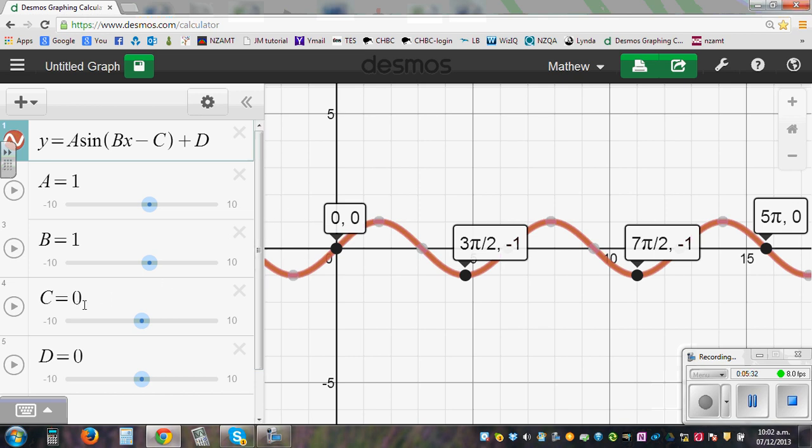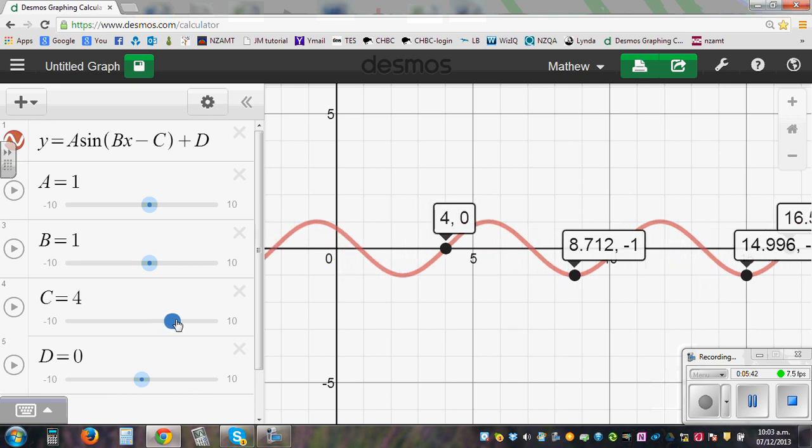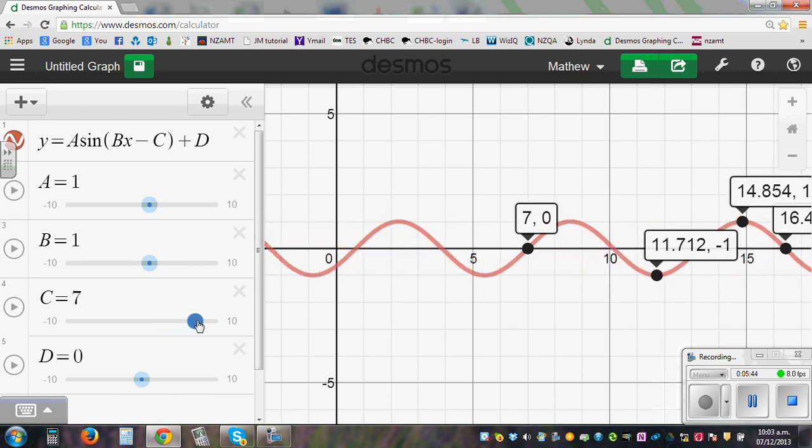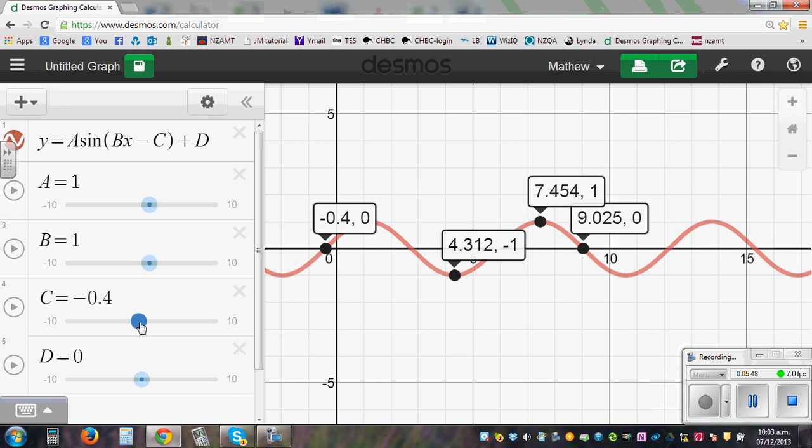So what happens when C changes? The C changes, shifts it to the right or left. So let me use the slider. So C changes, the graph moves to the right or left. So that's the phase shift.